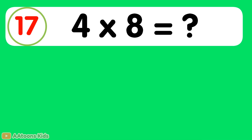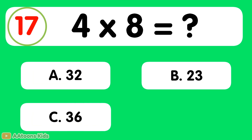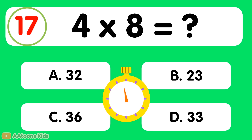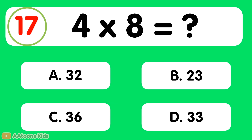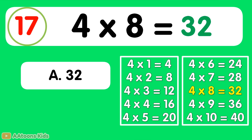4 times 8 is equal to... 32. 4 times 8 is 32.